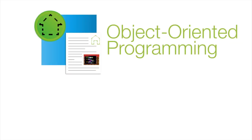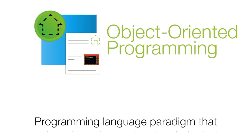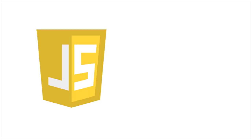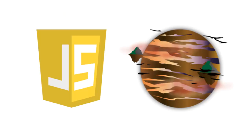Object-oriented programming is a programming language paradigm that categorizes pieces of code into logical, self-contained objects. Each object has its own clearly defined set of tasks in a program. A lot of different programming languages are object-oriented, including JavaScript, which is what we'll be learning in the Codable Curriculum.